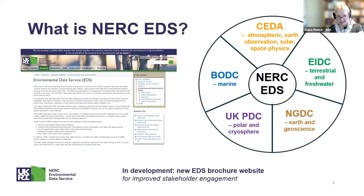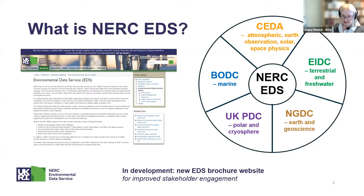The Environmental Data Service consists of five data centers. We have the British Oceanographic Data Center, UK Polar Data Center, the NGDC (National Geoscience Environmental Information Data Center), and the Center for Environmental Data Analysis. You can find more on the website. We also have a new brochure website coming very soon. The EDS is a network of data centers maintained by NERC, which provides access to scientific information and data which NERC has funded.